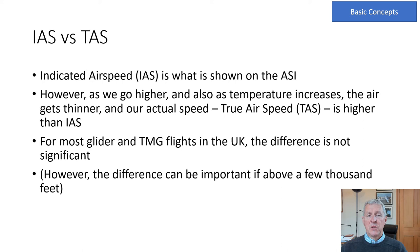There's a difference between indicated airspeed (IAS) and true airspeed (TAS). Indicated airspeed is what is shown on the ASI, but as we go higher and as temperature increases, the air gets thinner and our true airspeed is higher than the indicated. For most glider and TMG flights in the UK the difference is only two or three knots, but if you're flying high — in wave at 12,000 to 15,000 feet, for example — the difference can be quite significant.